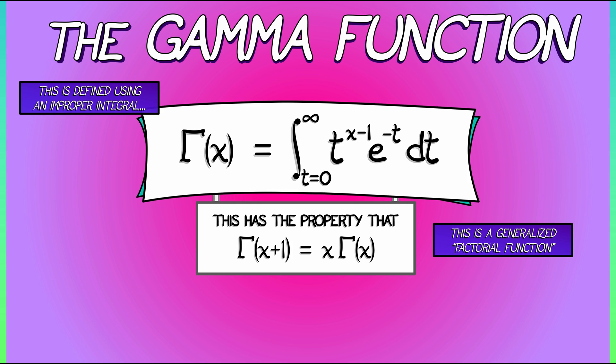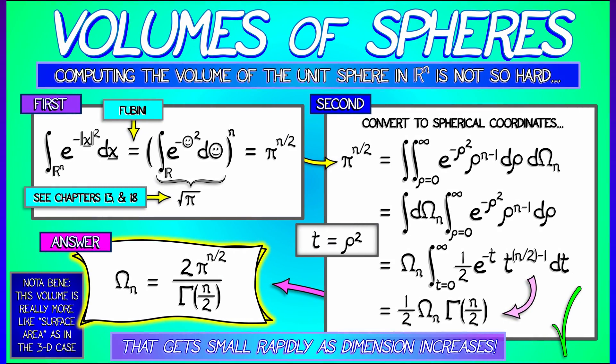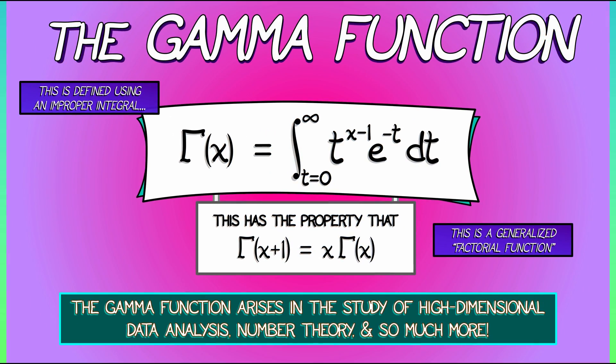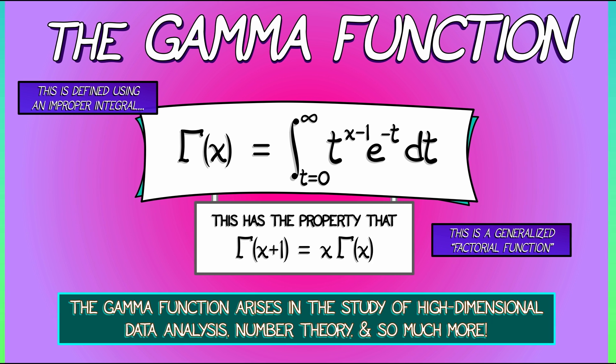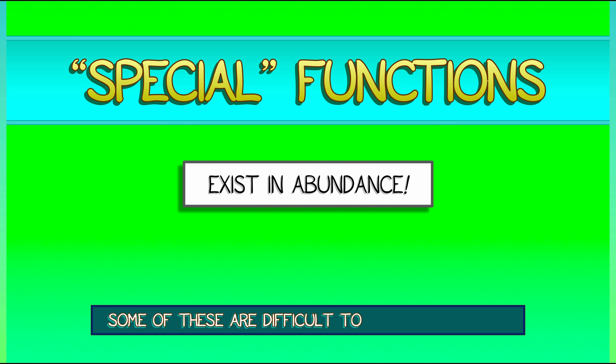Now, you may not see it from its appearance, from its definition, but this gamma function, oh man, it's everywhere. It's all over the place. It arises in high-dimensional geometry. It arises in data analysis. It comes up in number theory. It comes up in harmonic analysis. It comes up in combinatorics. It comes up just everywhere. The gamma function is ubiquitous, especially when you start talking about other classes of special functions that are just all over the place in mathematics, a lot of which they're very difficult to define explicitly.